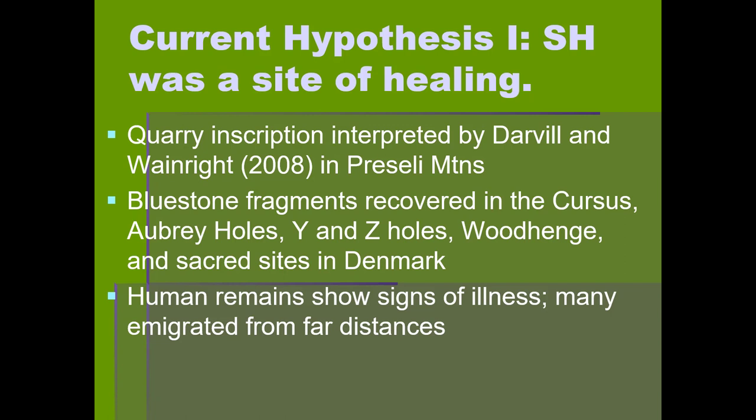Darvill and Wainwright have done recent excavations within Stonehenge and the surrounding landscape, finding blue stone fragments in the Cursus, in Aubrey holes, Y holes, Z holes, at Woodhenge, and at sacred sites all the way to Denmark. Perhaps even more compelling, some of the human remains excavated around Stonehenge seem to be from people with very chronic illnesses — crippled or with debilitating disease — who originated from places very far from Stonehenge, yet were buried near Stonehenge and buried with pieces of blue stones.